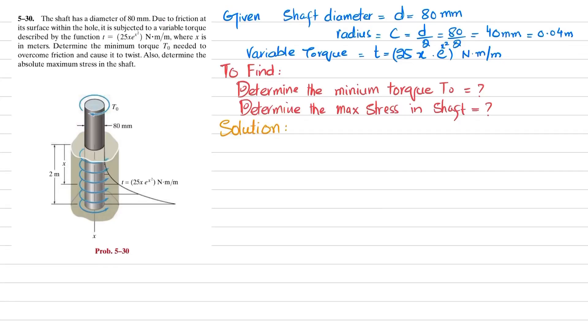Welcome back to problem 5-30. The shaft has a diameter of 80 millimeters. Due to friction at its surface within the hole, it is subjected to a variable torque described by the function T = 25xe^(x²), where x is in meters.